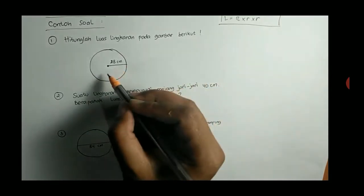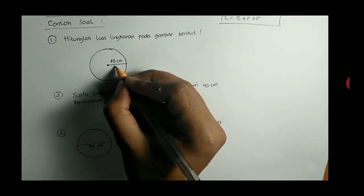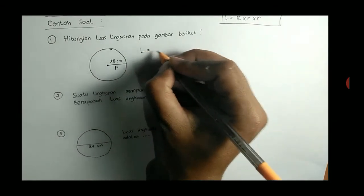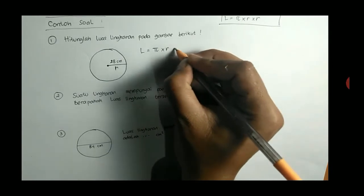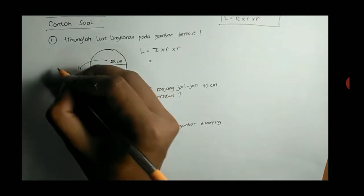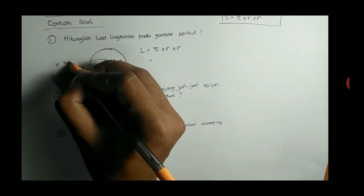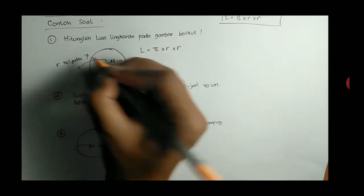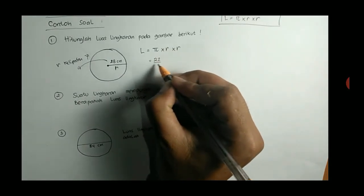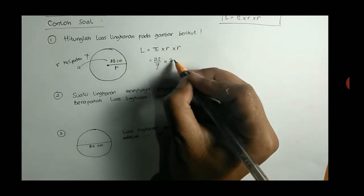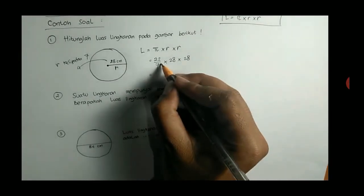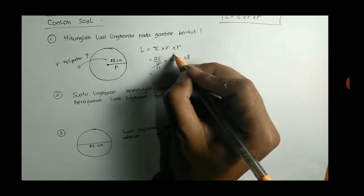Contoh nomor 1, hitunglah luas lingkaran pada gambar berikut. Ini ada gambar lingkaran, 28 ini adalah jari-jari, karena jarak dari pusat ke tepi. Jadi kita tuliskan rumusnya, L sama dengan P dikali R dikali R. Karena R-nya ini adalah 28, 28 itu bisa dibagi 7 atau kelipatan 7, berarti kita gunakan P yang 22 per 7. R-nya 28, 22 per 7 kali 28 kali 28. Kita sederhanakan 7 di bawah dengan 28 di atas, bagi 7, 1, bagi 7, 4.